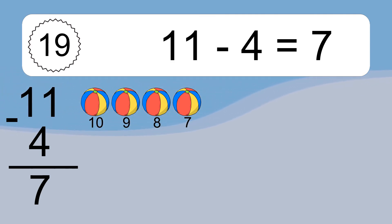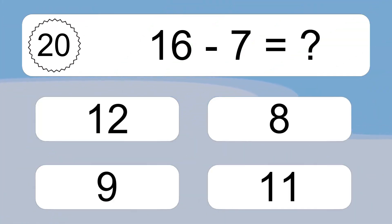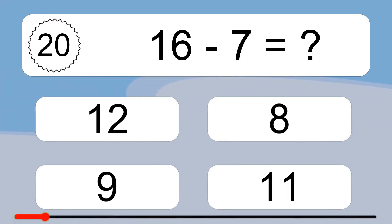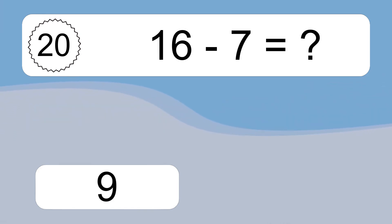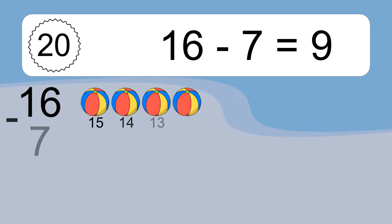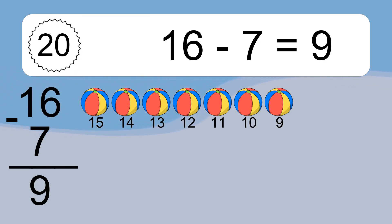16 minus 7 equals what? 16 minus 7 equals 9. Let's count it: 15, 14, 13, 12, 11, 10, 9.